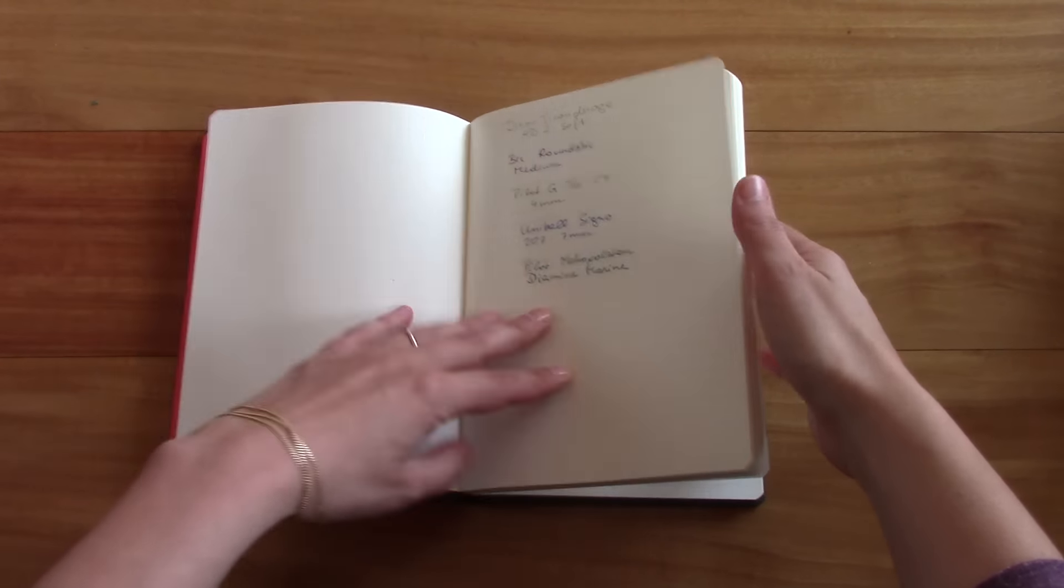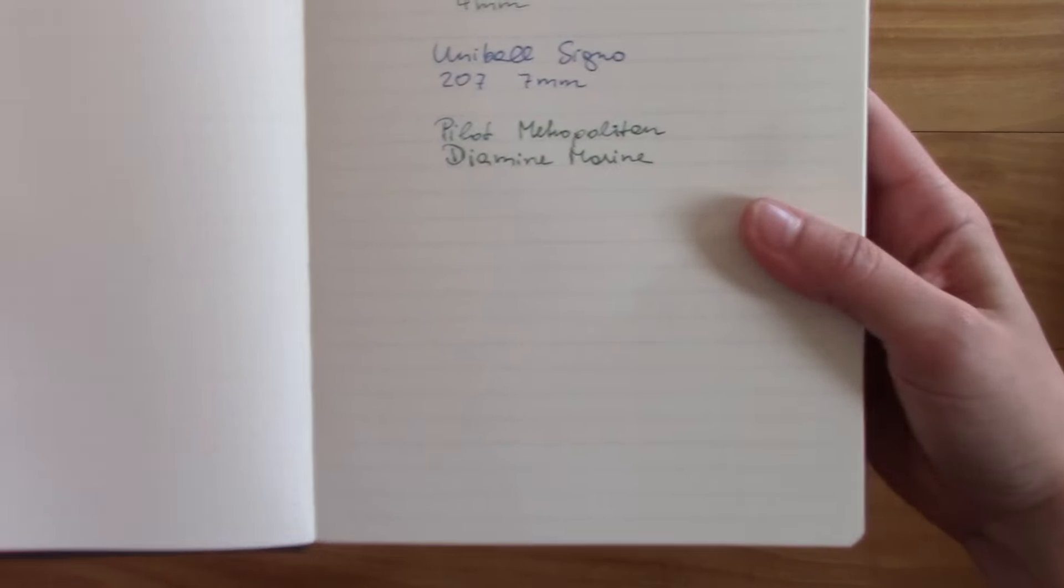And then let's check out the writing sample I did. It performs pretty well, the paper, since it's 100 gram paper. Here's the pencil, ballpoint pen, 4mm gel pen, there's a 7mm gel pen, and then there's the fountain pen, medium nib.